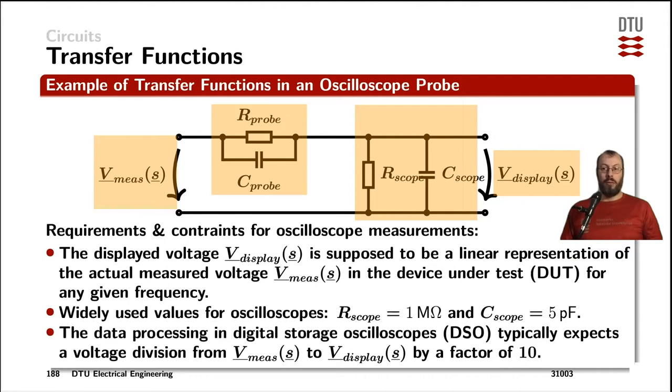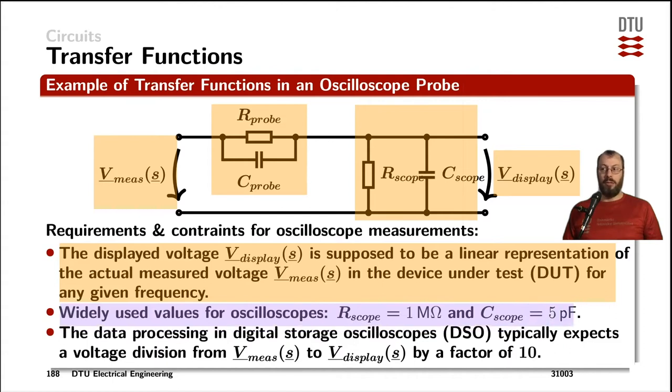Now you have a couple of requirements on what is getting displayed compared to what you actually measure. The displayed voltage that is getting digitized in the oscilloscope is supposed to be a linear representation of the actual measured voltage Vmeas(s) independent on what frequency we are measuring at. Then we have another constraint that most of the oscilloscopes on the market have an input resistance of 1 megaohm in parallel with about 5 picofarads. That's pretty much industry standard for most of the oscilloscopes in use.